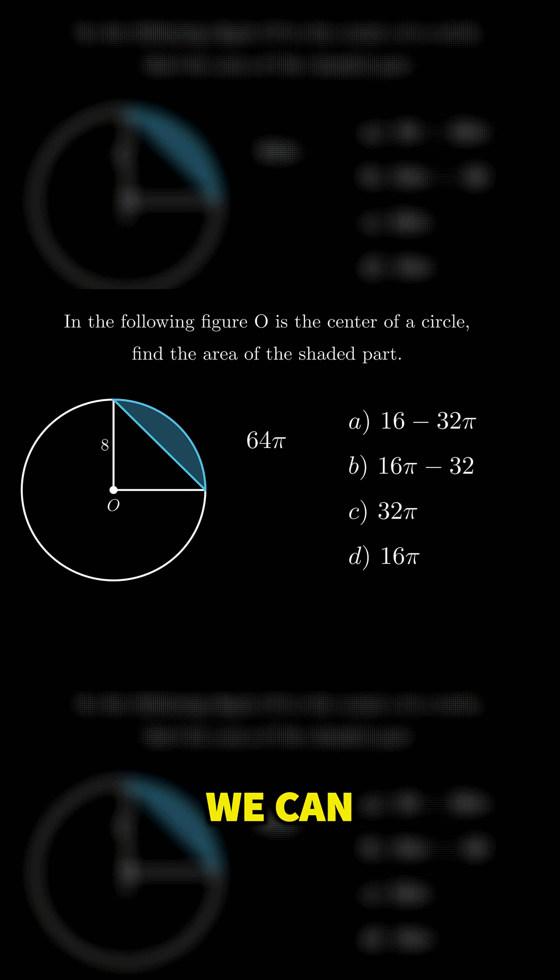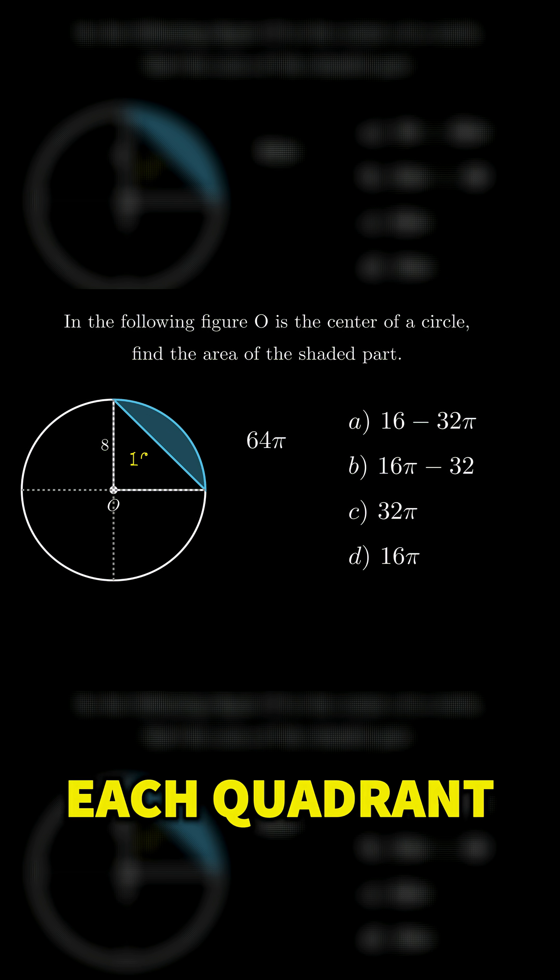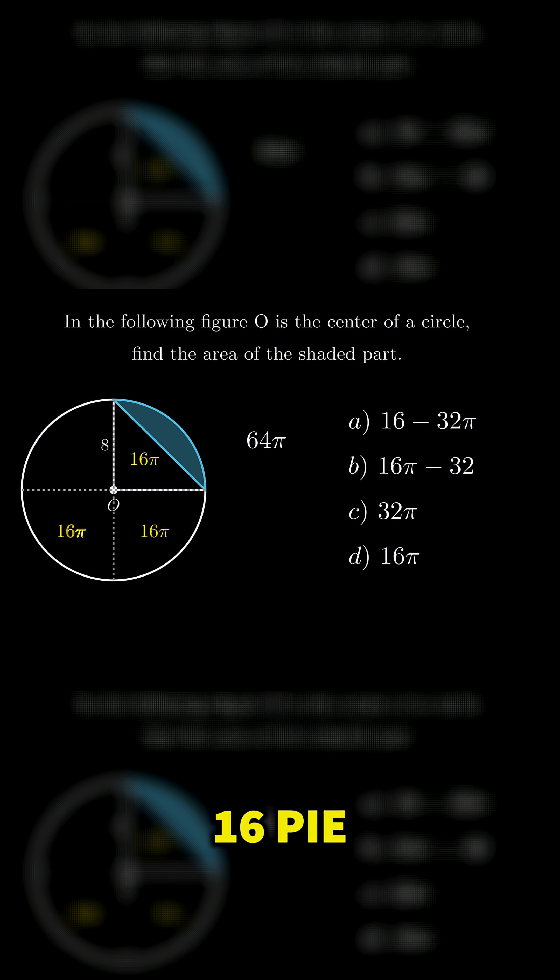After that, we can divide the circle into 4 equal quadrants. Each quadrant is going to be equal to 16π, but we are just interested in the top right section.